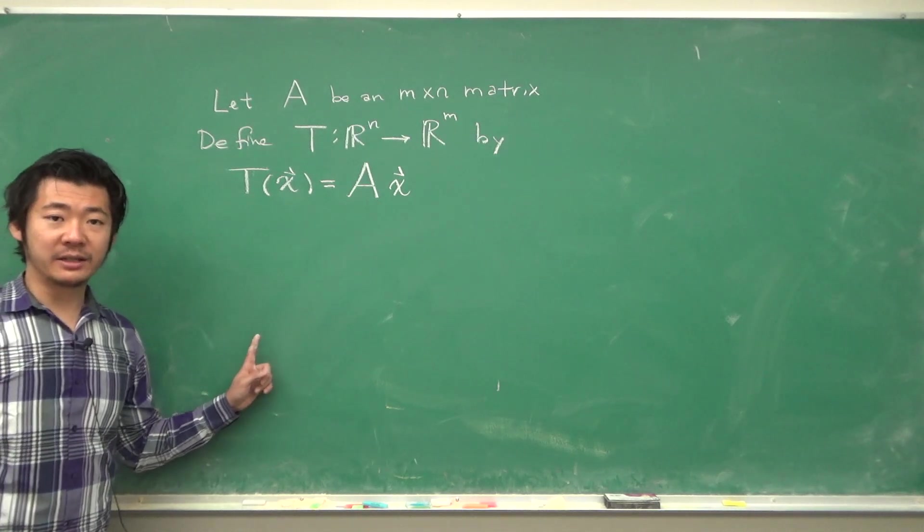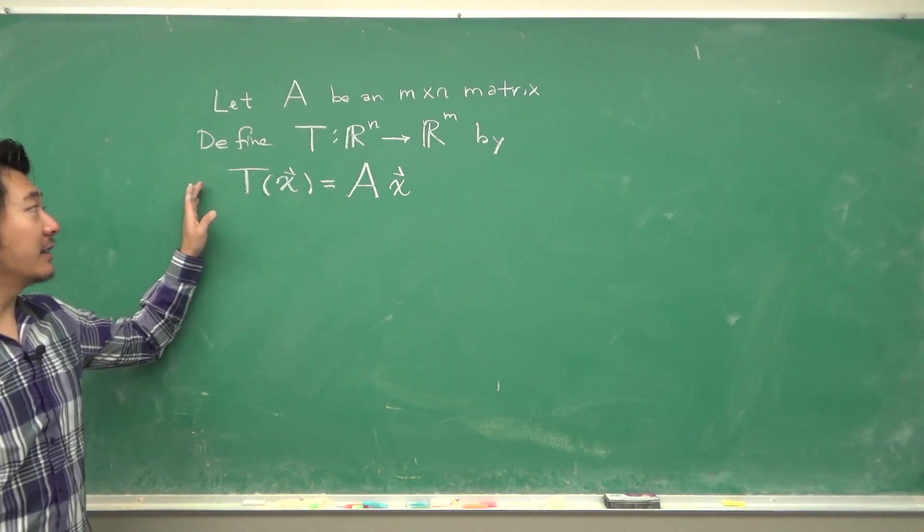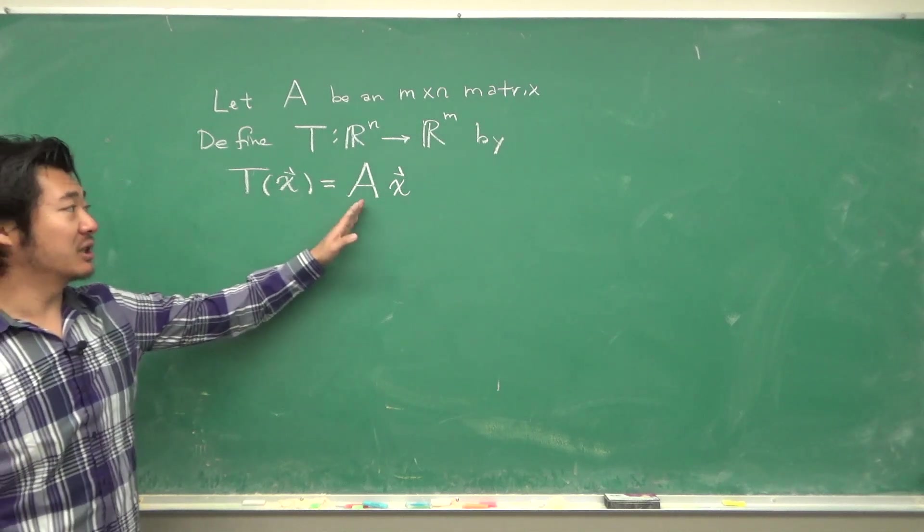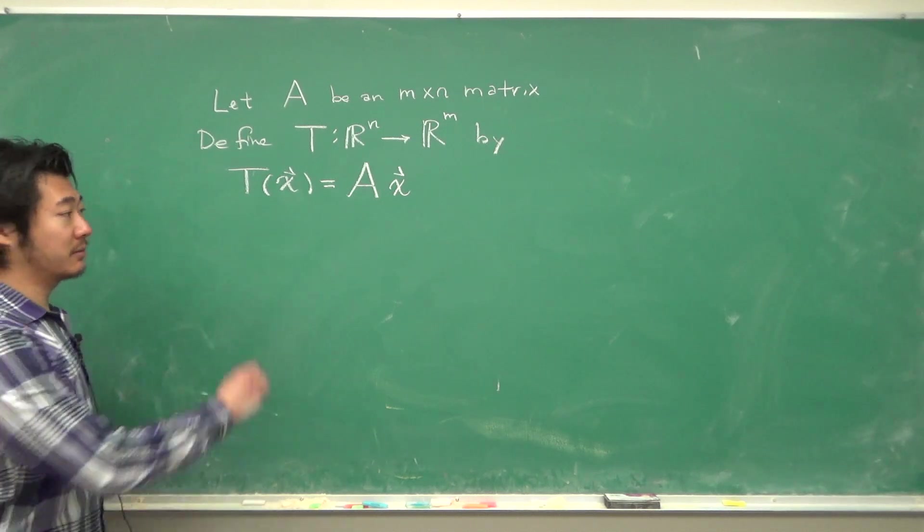Another example that was discussed in a previous video is this example. If we define a linear transformation by a multiplication of a matrix and a vector, then this is a linear transformation.